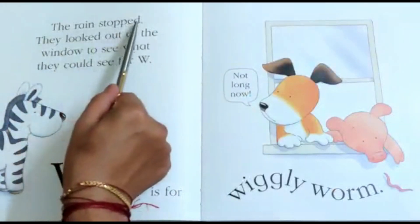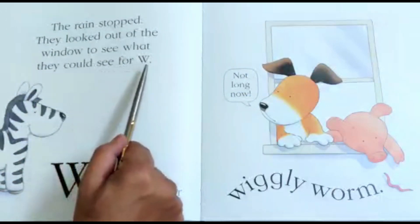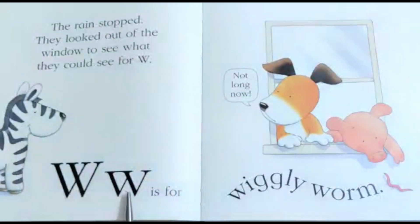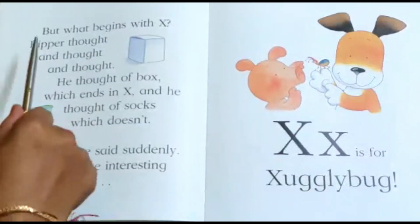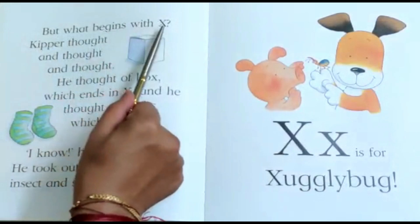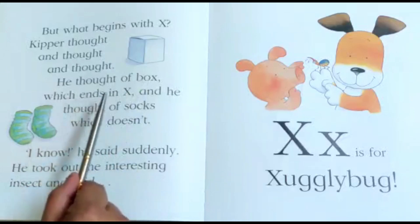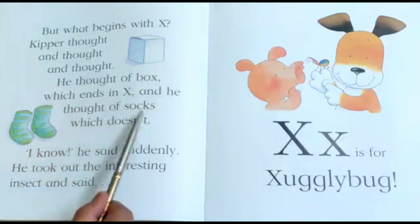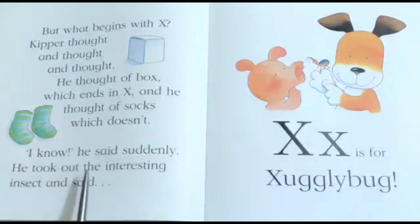The rain stopped. They looked out of the window to see what they could see for W. W is for wiggly worm. Not long now. But what begins with X? Kipper thought and thought and thought. He thought of box which ends with X, and socks which does not. I know, he said suddenly. He took out the interesting insect and said X is for zoogly bug.